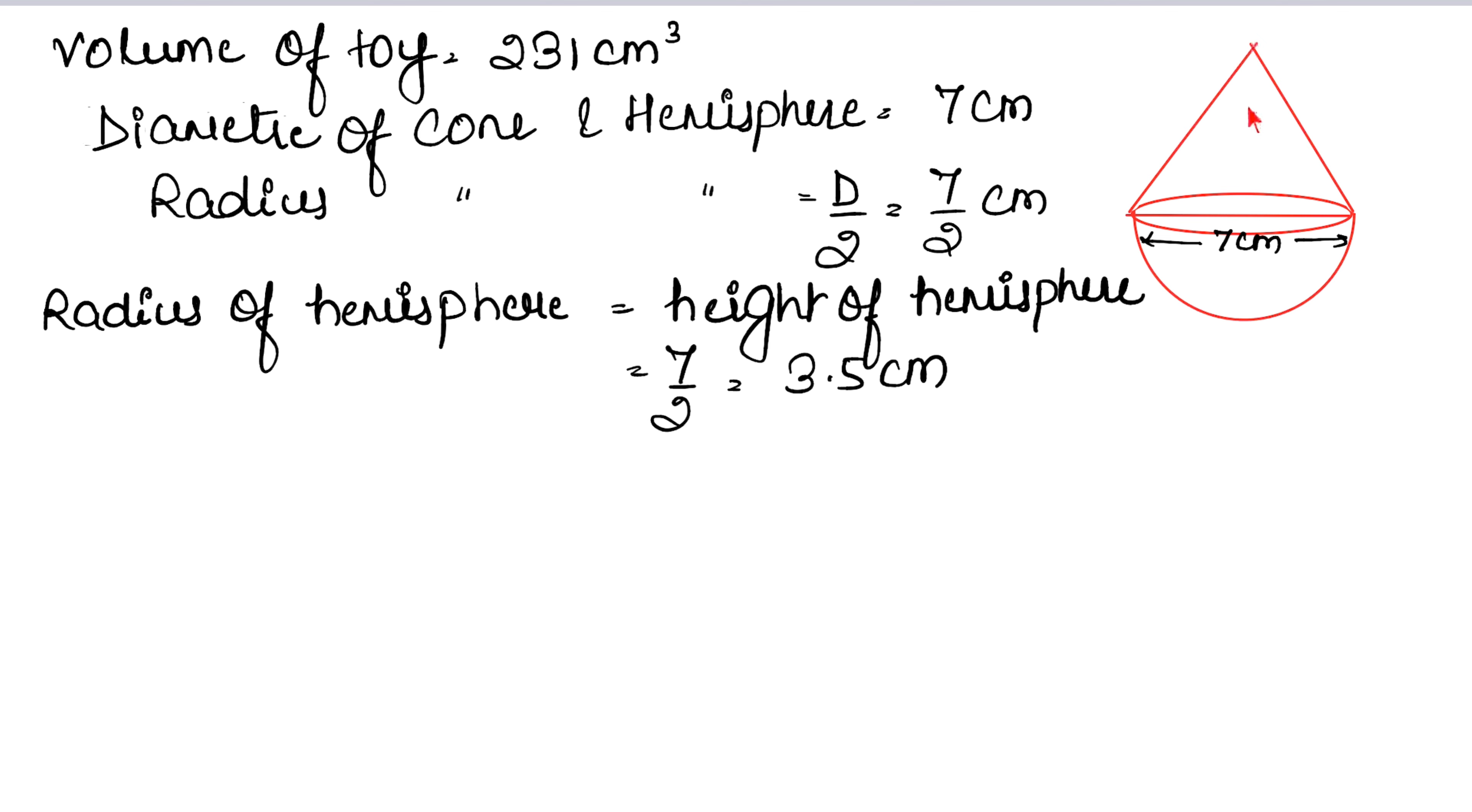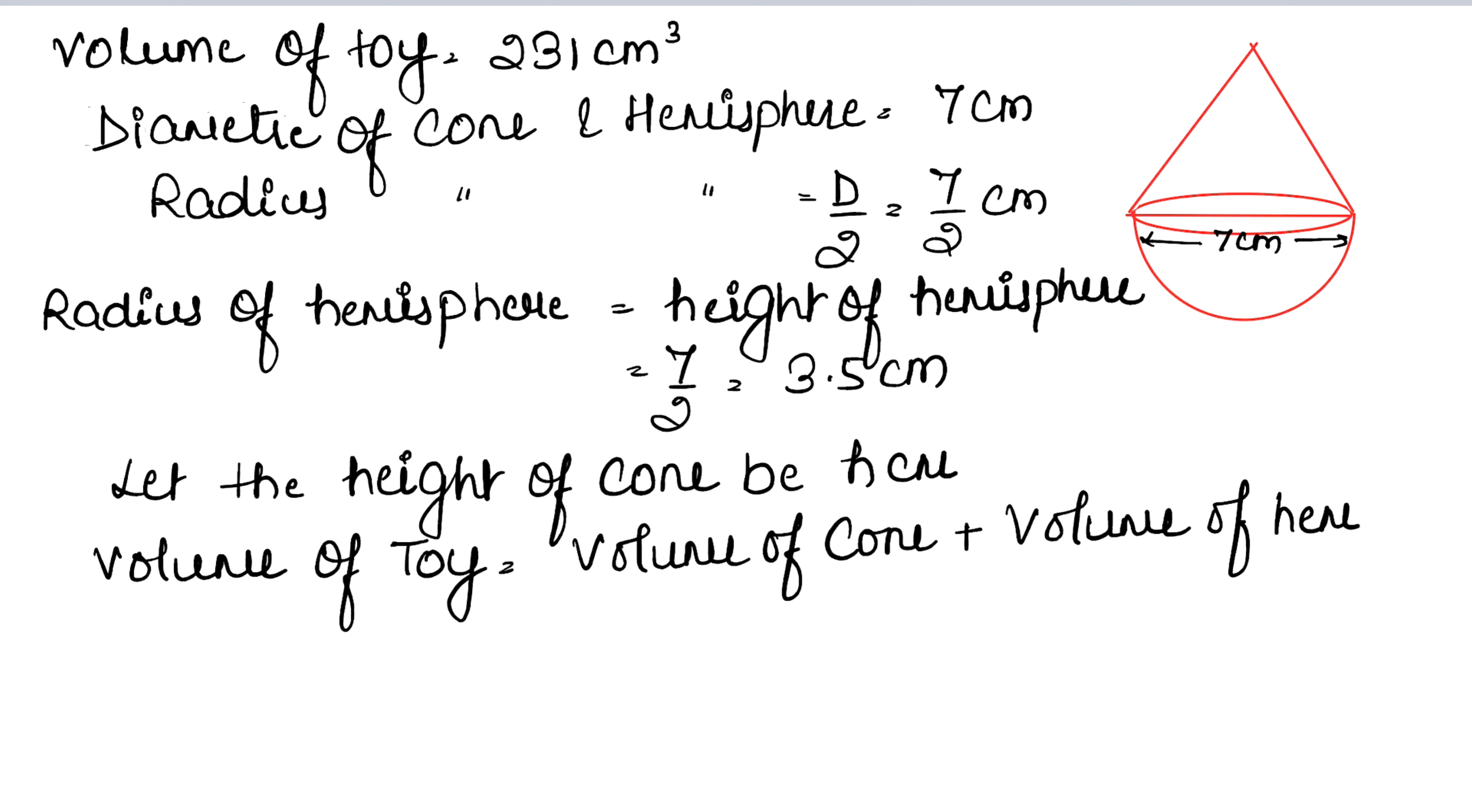Let the height of cone be h cm. So now we have to get the volume. Volume of toy equals volume of cone plus volume of hemisphere, right?